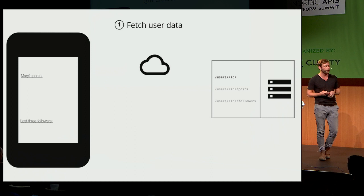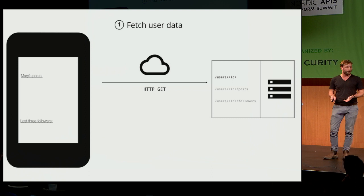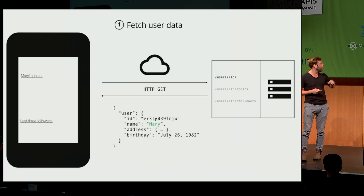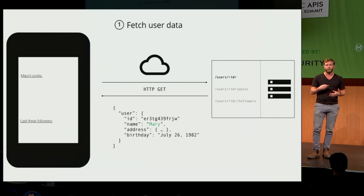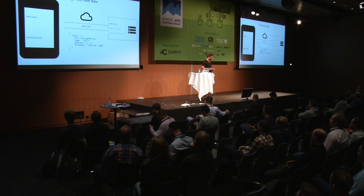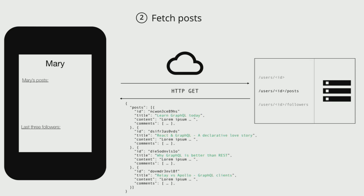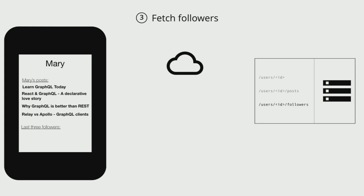When implementing this profile screen, we'd make three requests. The first is a GET request to the users ID endpoint to get the user's first name — but we're downloading additional information we don't need, putting unnecessary weight on the user's data plan. Then we hit the second endpoint to fetch all posts, again downloading extra data when we only need the post titles.